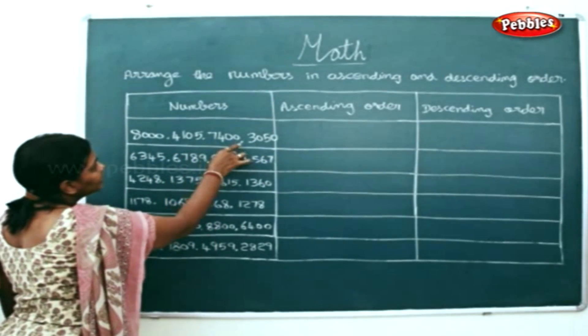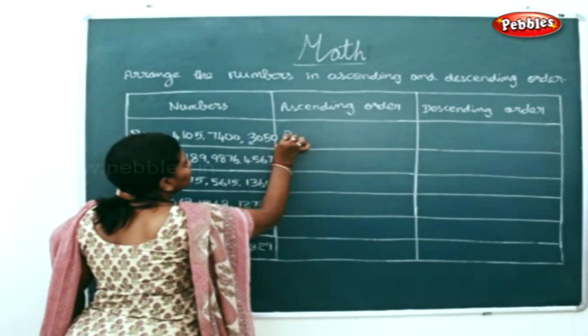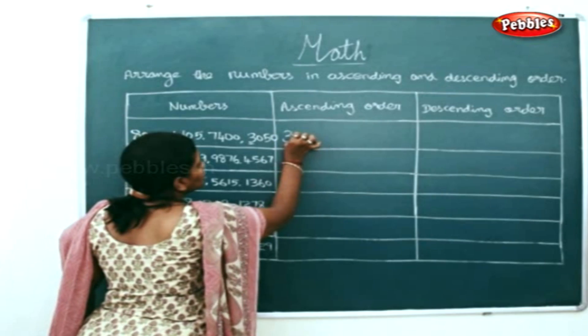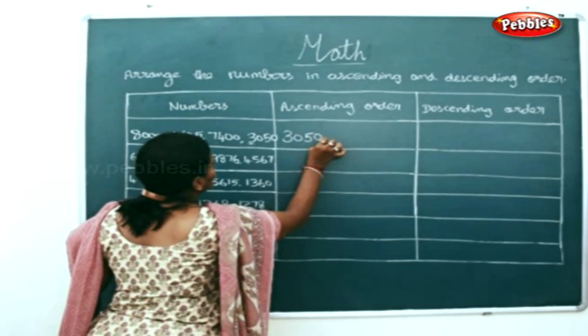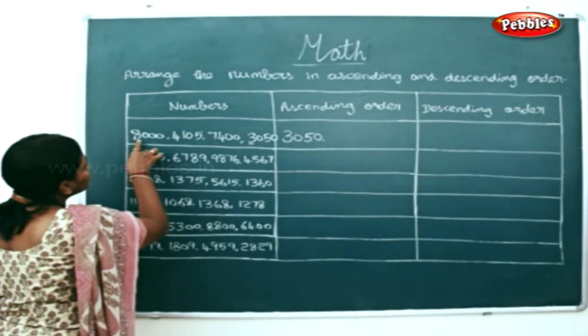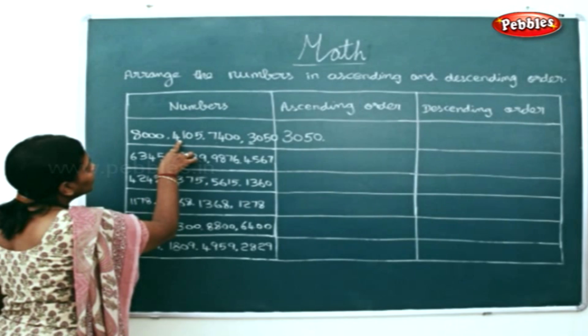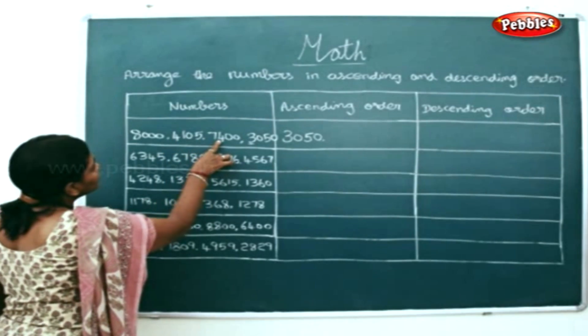So, which is the least number here? 3000 and 50. The next numbers are 8000, 4000, 105, 7400.